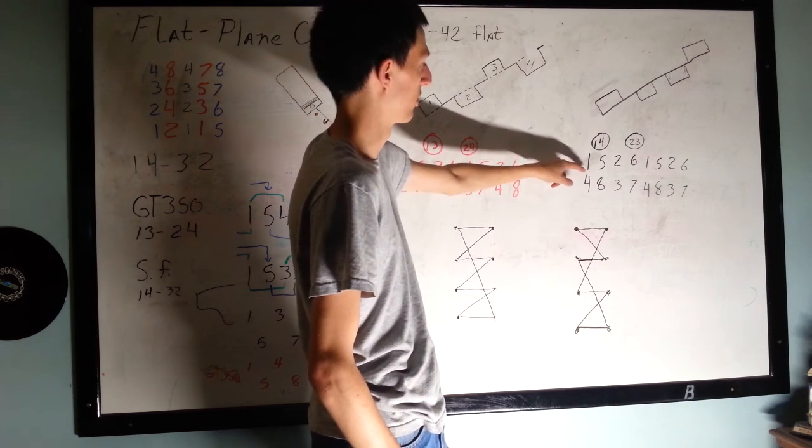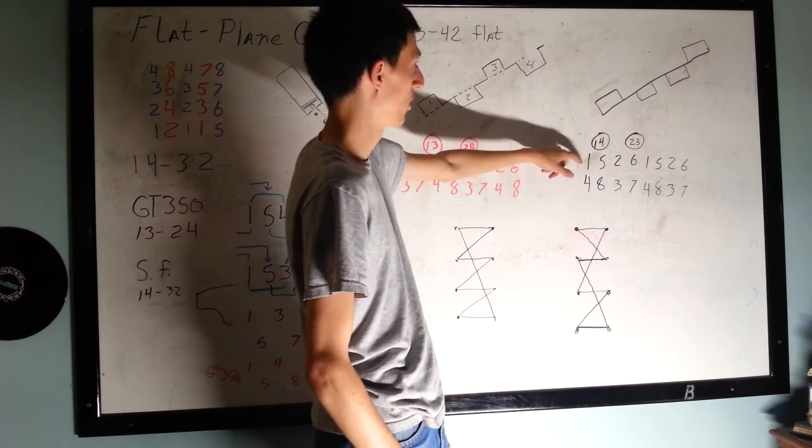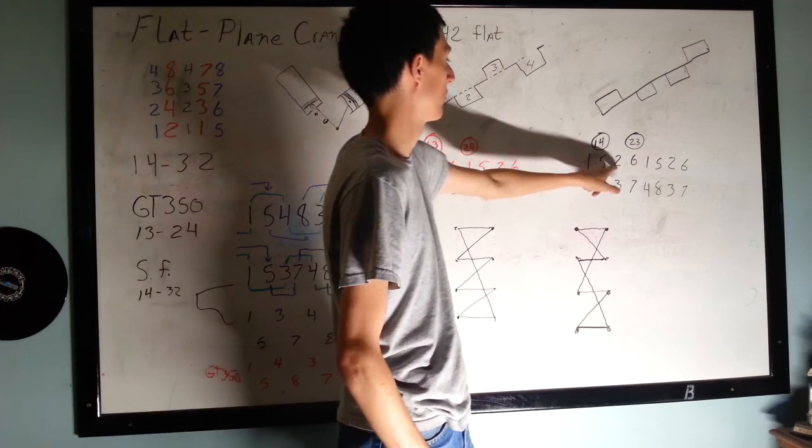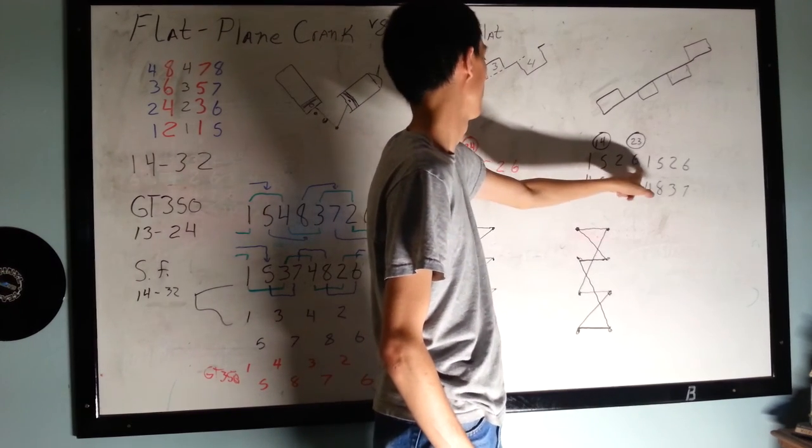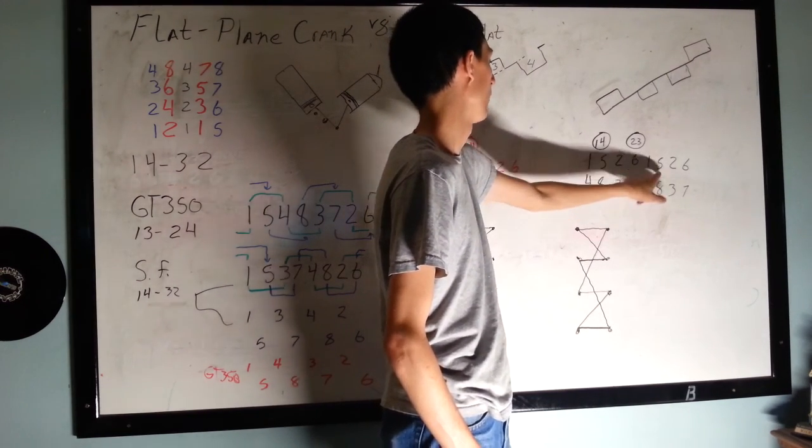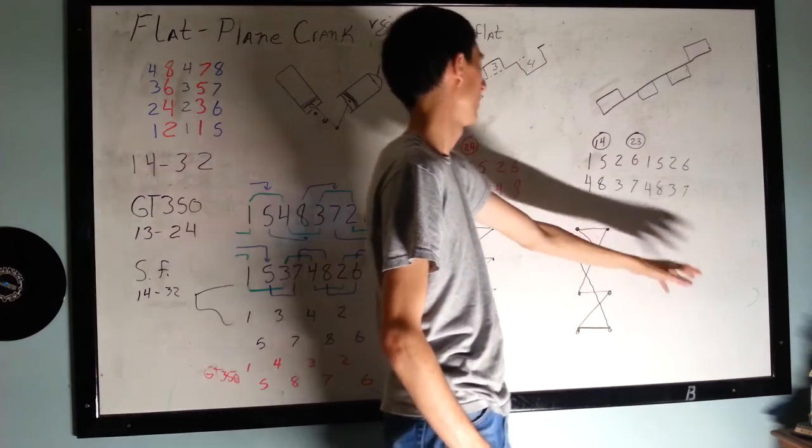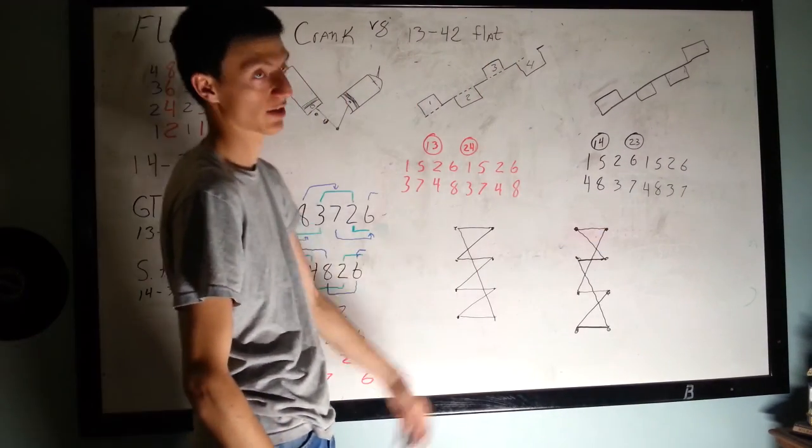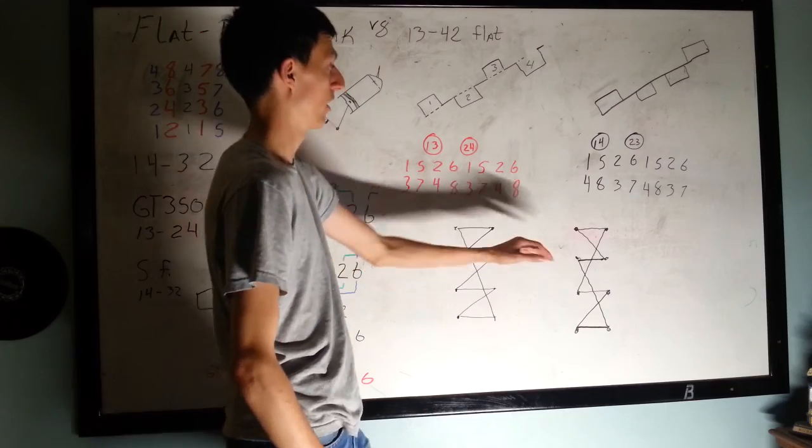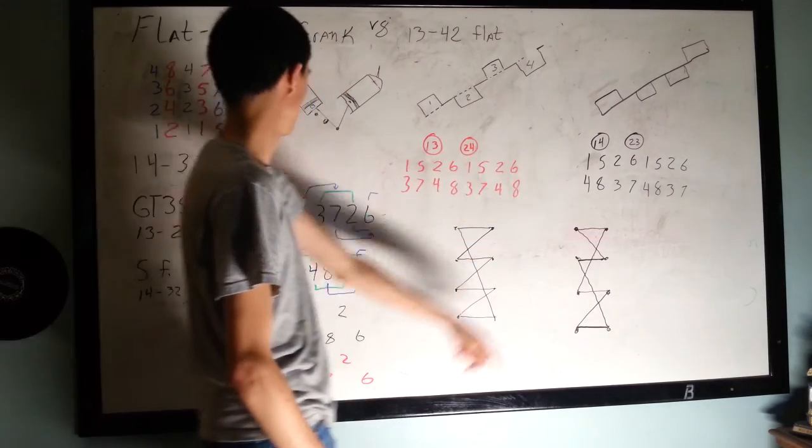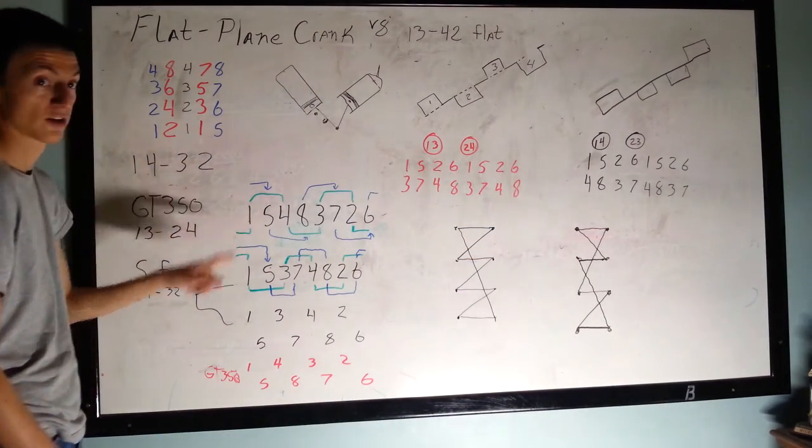And then you can choose stuff too. It doesn't have to be this way. You could do 1-8-2-6-4-5-3-7. And all that's going to change, or I don't want to say all that's going to change, but what is going to change is the helper cylinders here.